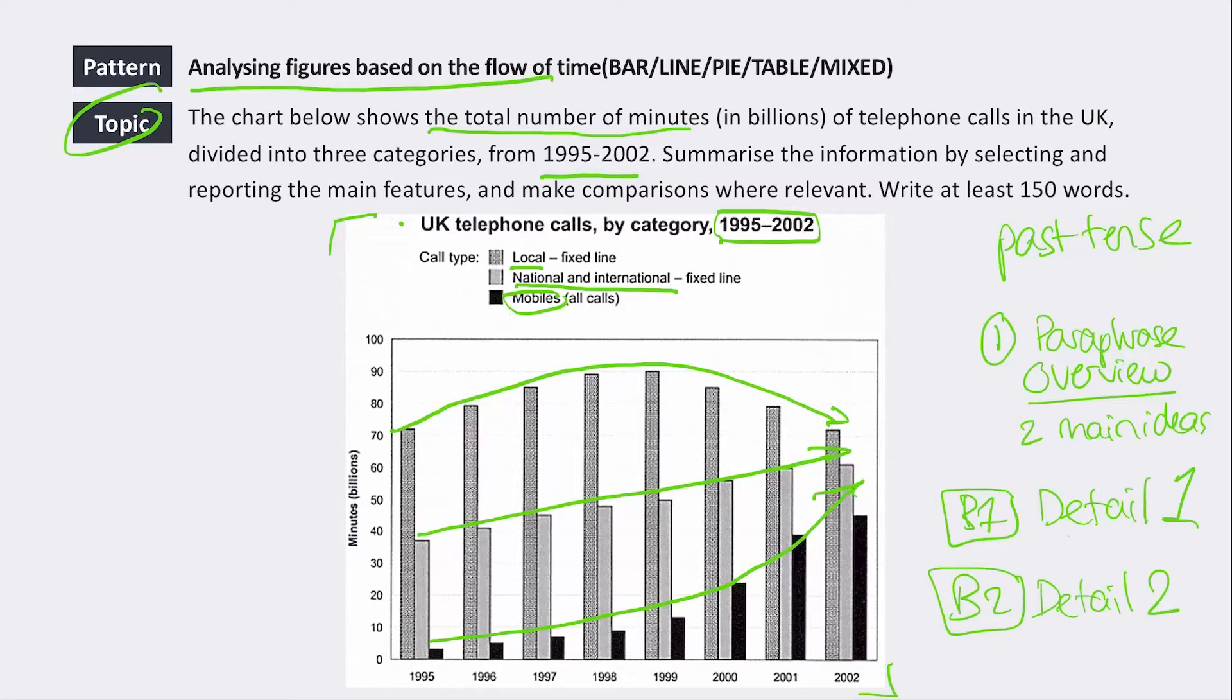National and internationals have steadily risen over the period and there was a huge increase in mobile. So I would probably put local in body one and then mobile and national and international in body two because you can have two increasing and then one increase and decline. So you can speed it up like that.